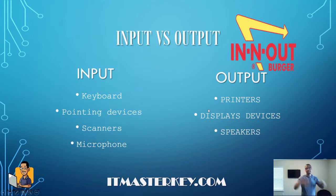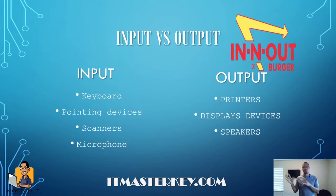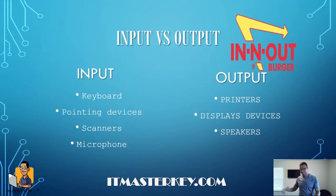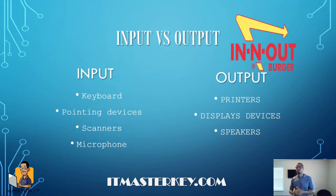So input versus output devices. Input — putting something in. Output — you're getting something out of it. So as we go down this list, an input device would be a keyboard — input in keystrokes. Pointing devices, like a mouse or a wireless mouse. Scanners — you're inputting a piece of paper to be scanned and then it's input inside the computer or scanner. Microphone — you're inputting sound waves into the microphone so you can be heard.